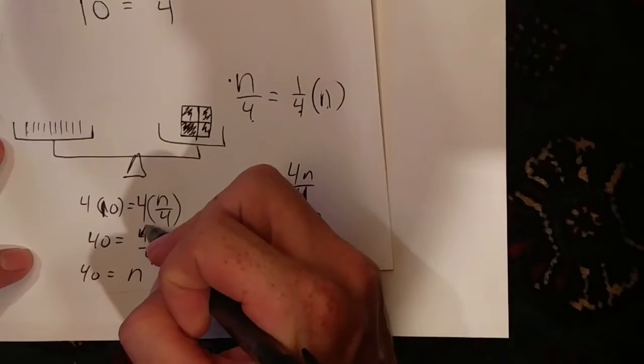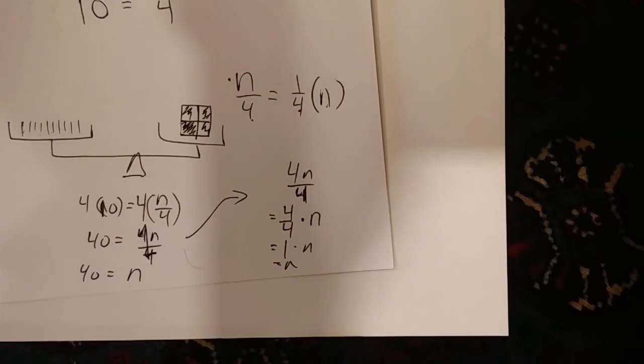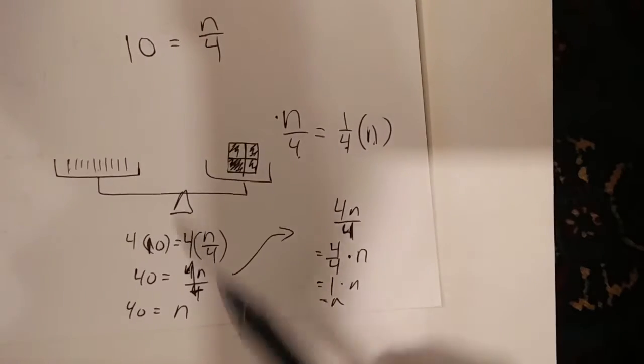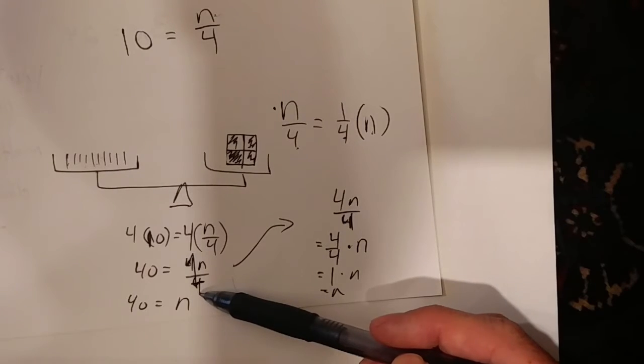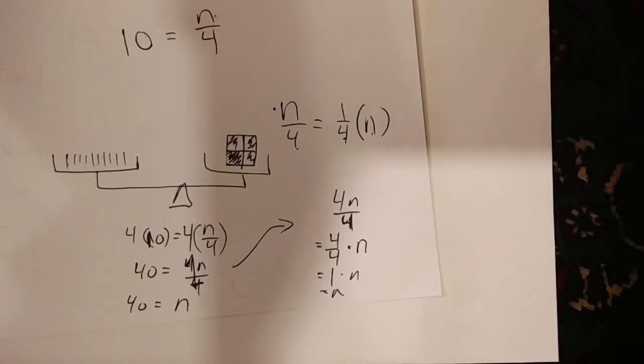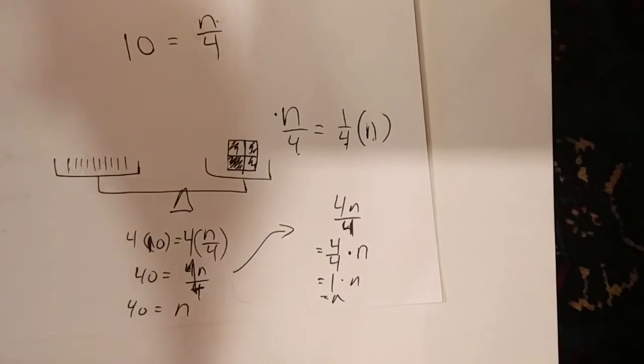Okay, and there you have it. I've just taken a part of a variable and found out that the entire variable is equal to 40. Hope that helps, and in the last one we're going to be looking at opposites.